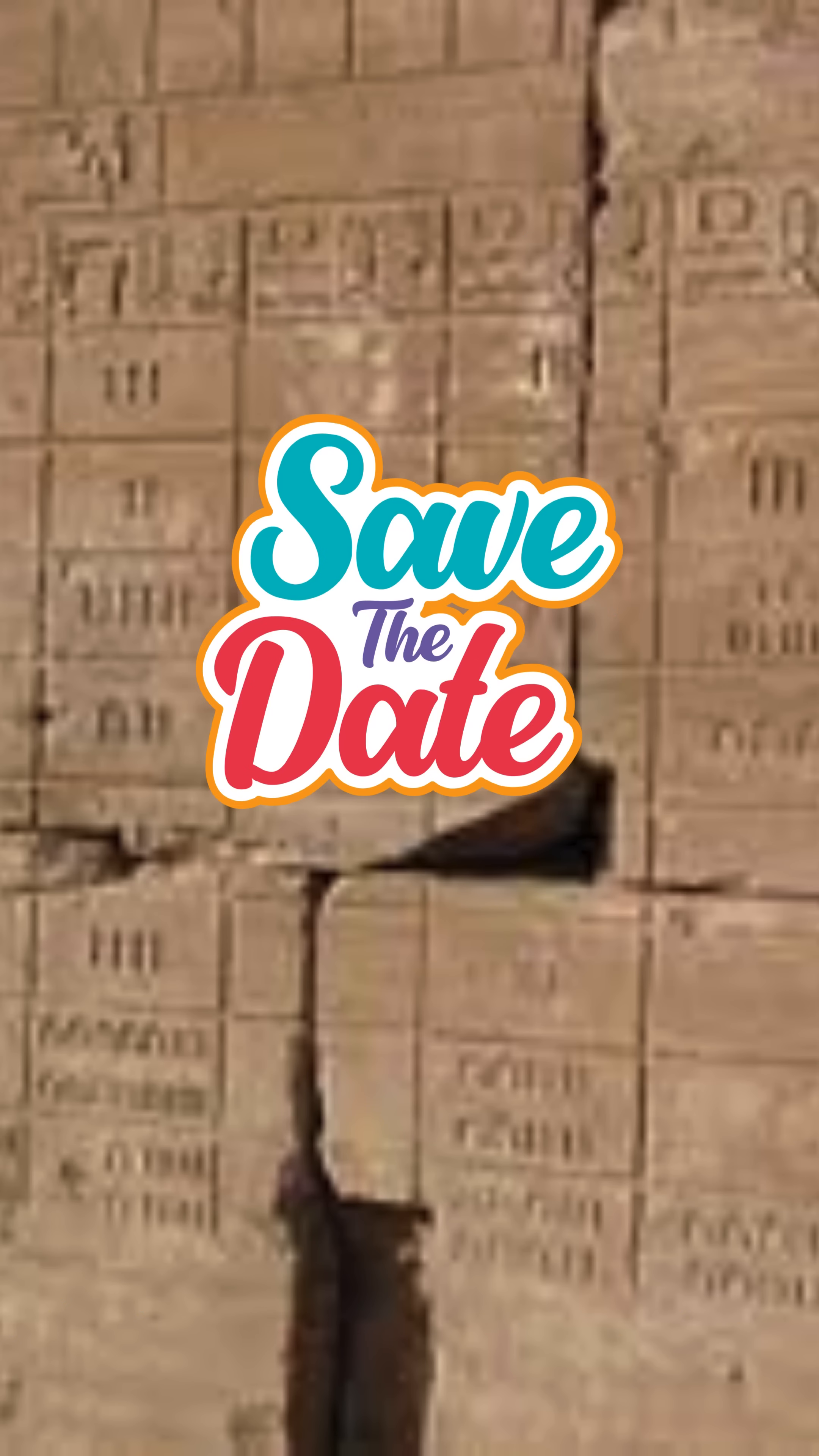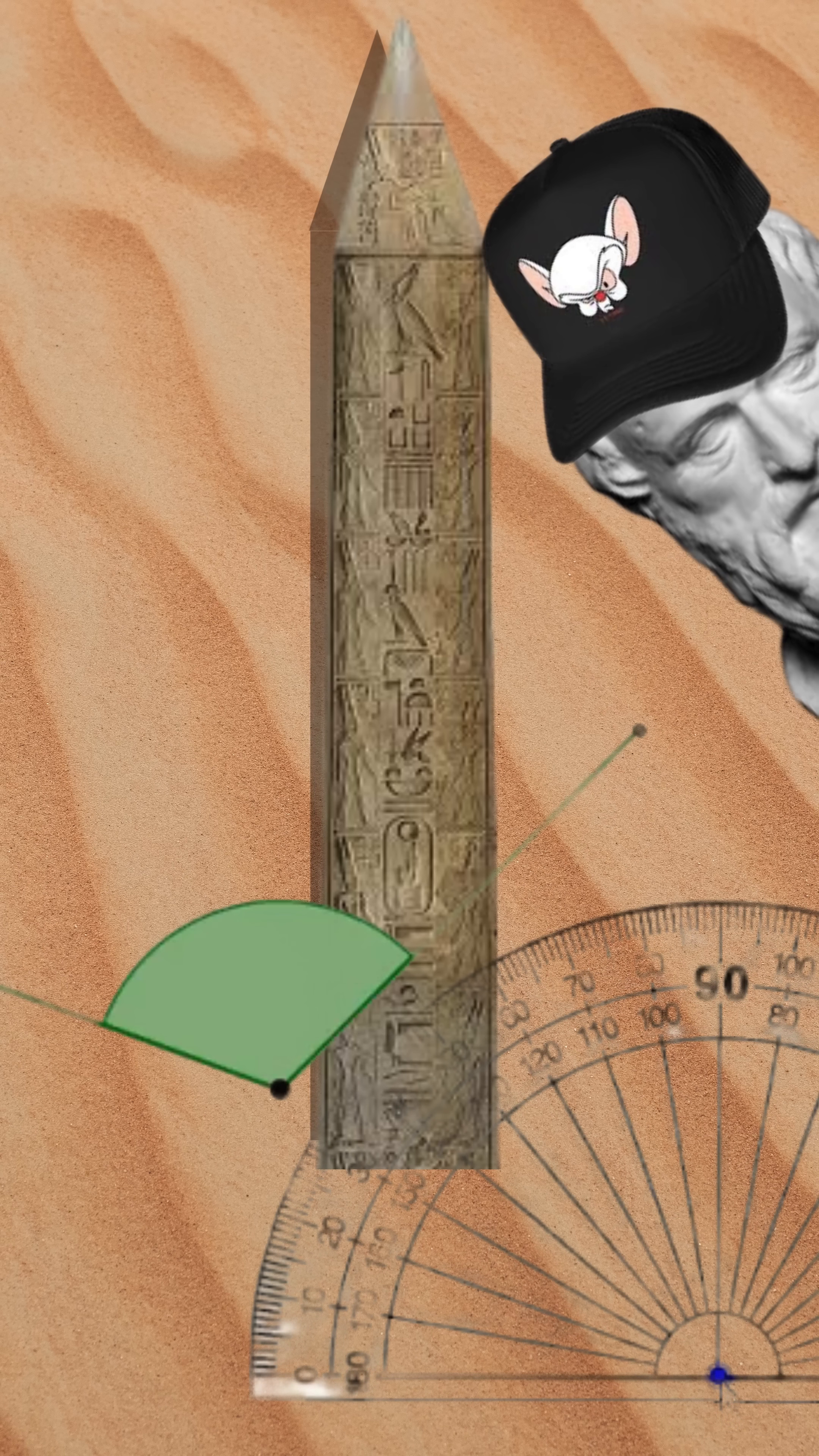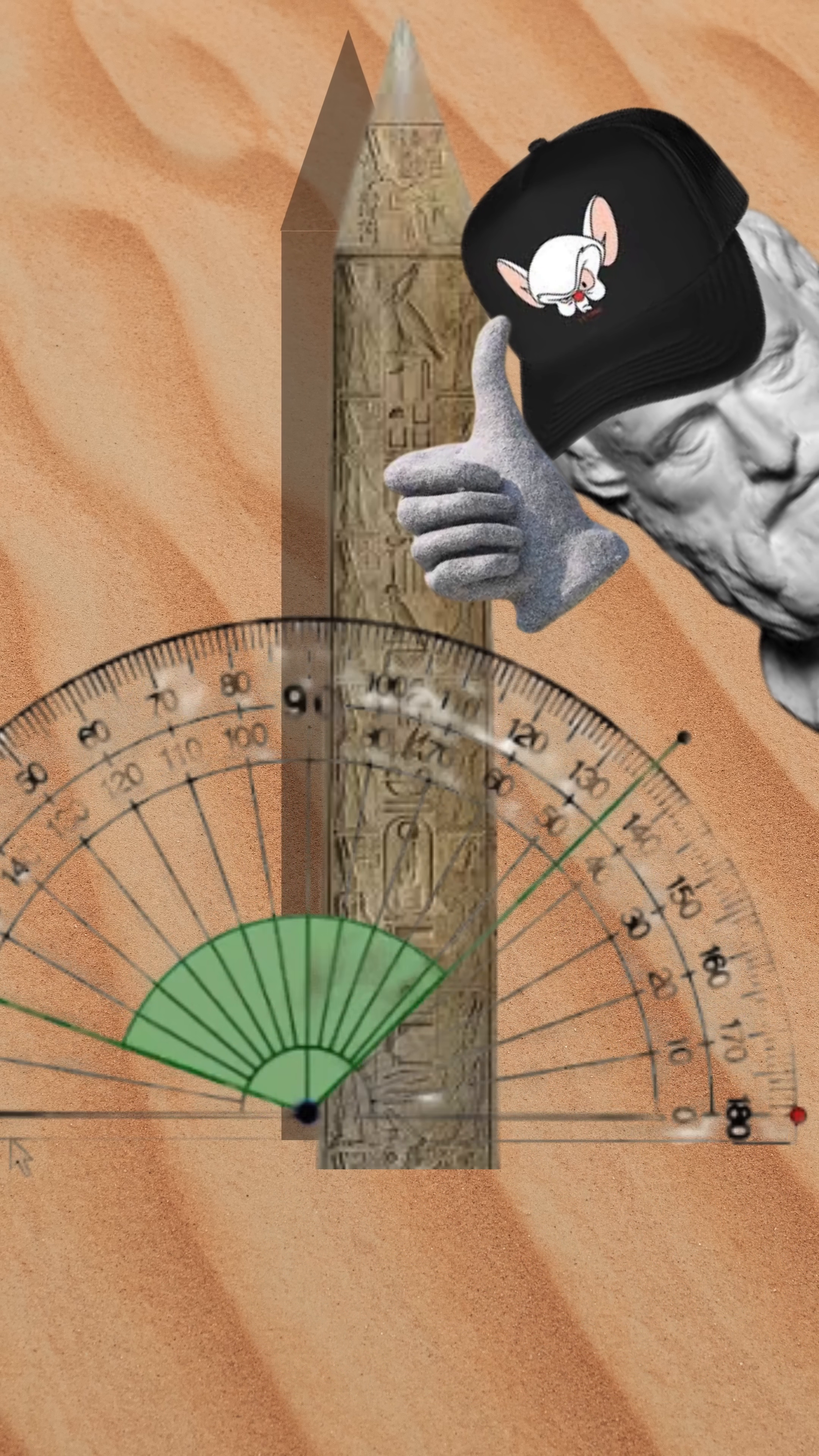On that exact same day in Alexandria, he measured the casted shadow, and it was 7.2 degrees off the vertical.